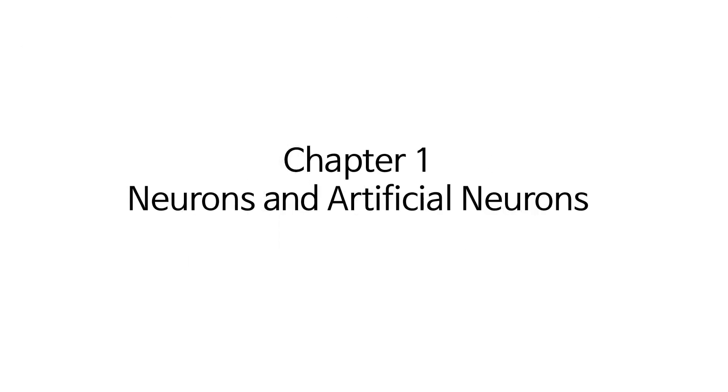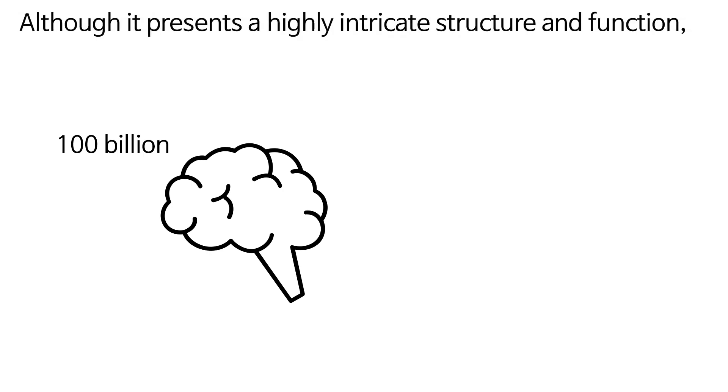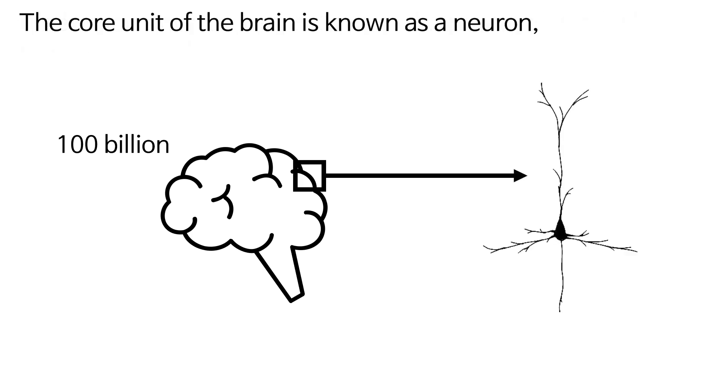Chapter 1: Neurons and Artificial Neurons. The human brain comprises a staggering 100 billion neurons. Although it presents a highly intricate structure and function, the fundamental units constituting the brain are relatively straightforward. The core unit of the brain is known as a neuron.